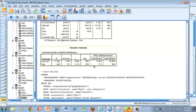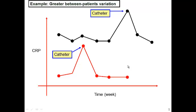But we know this p-value is wrong because the probability computation assumes all observations are independent. What's wrong if data are not independent? Here's the example from the previous video: black dots indicate CRP data from a single patient, and red dots indicate data from another patient. There are two patients — one with a higher CRP value and one with a lower CRP value.